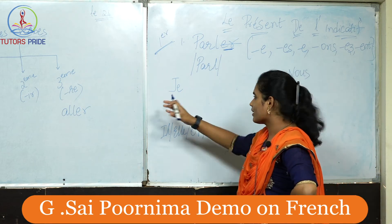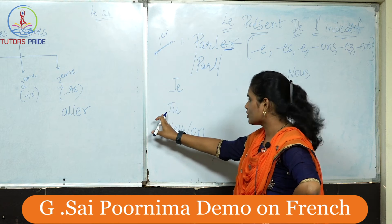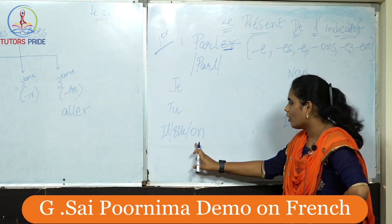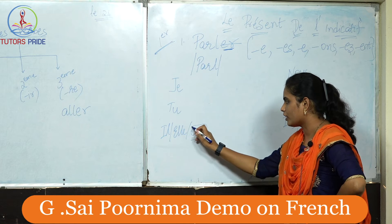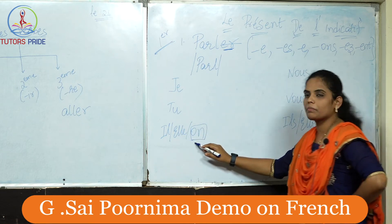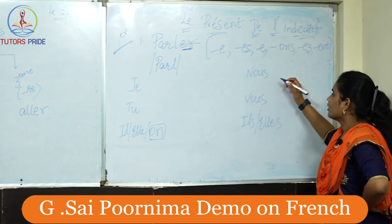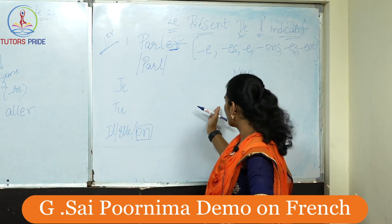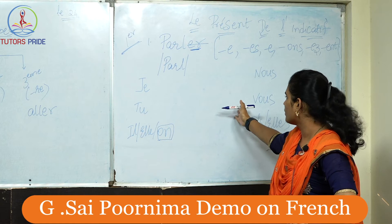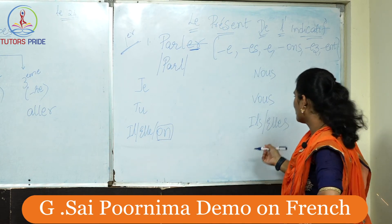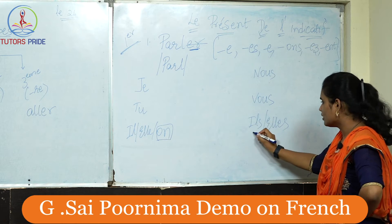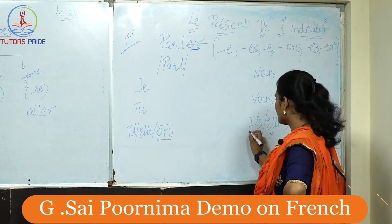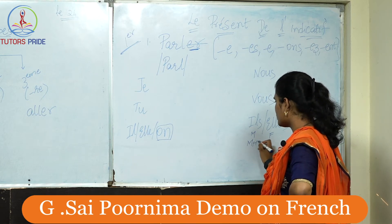So: 'je' means I, 'tu' means you (informal), 'il' means he, 'elle' means she, 'on' means we — this is the French informal we, used most often. 'Nous' also means we. 'Vous' means you in the formal way. 'Ils/elles' is masculine and feminine respectively; if it is a mixture of masculine and feminine, we use 'ils'.